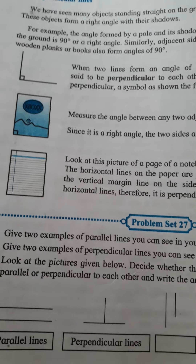Students, here are some examples given. Lines on a notebook are parallel lines. In problem set 27, this type of lines we call parallel lines. Then perpendicular lines — here 90 degrees, and here also 90 degrees — so these two lines we call perpendicular lines. When we extend these lines, they do not intersect, meaning these are parallel lines, and these are also parallel lines.